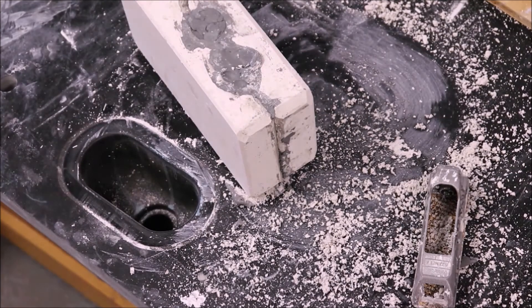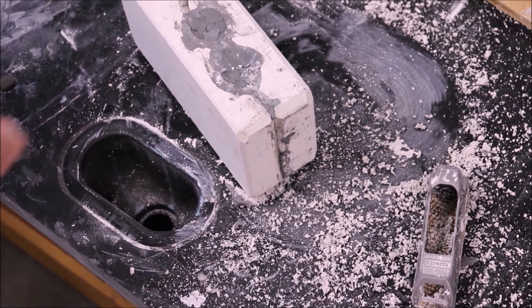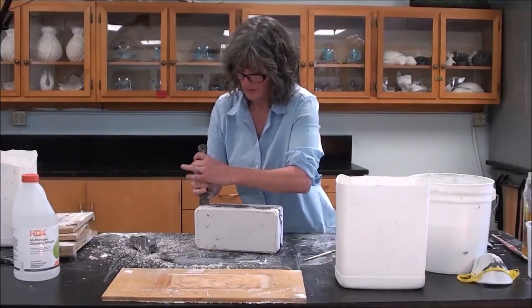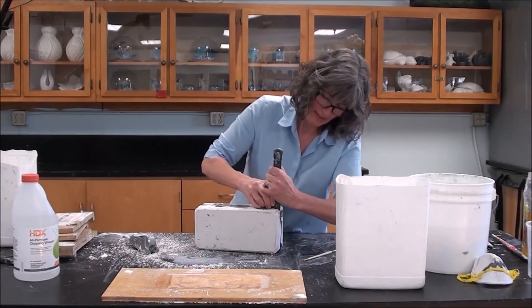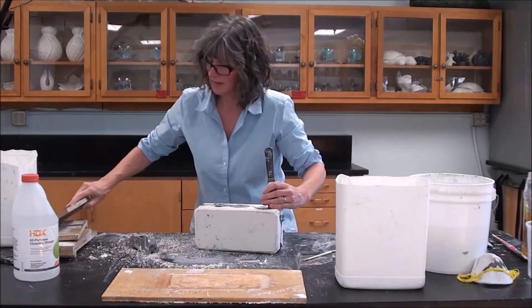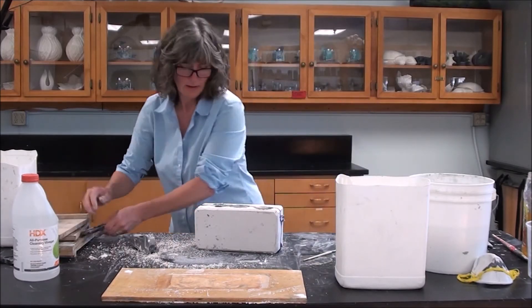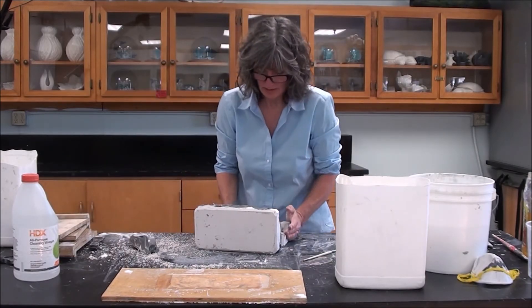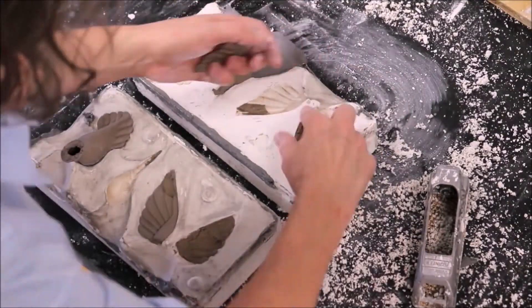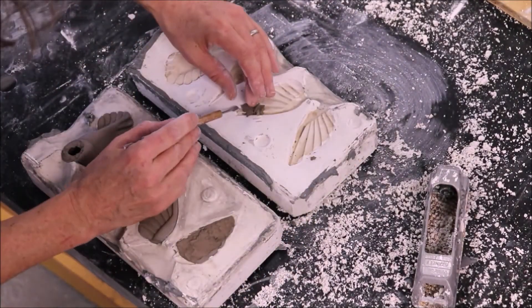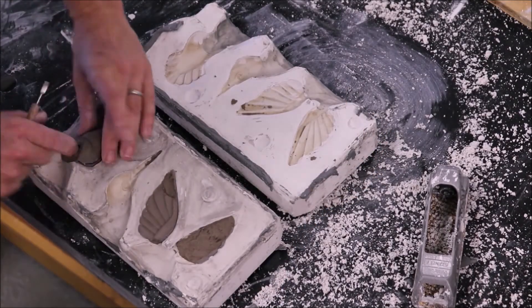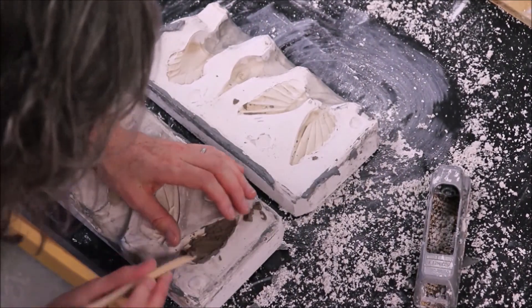Sometimes it pops open really easily. Sometimes I have to use a putty knife and a hammer to kind of pry them open. If I have to pry them open, I always pry it open from the top. Because you run the risk of putting a hole in your mold if you're prying them open. And you don't want a hole in the side of your mold or in the bottom of the mold. So if you have to pry it open with a putty knife, pry it open from the top.